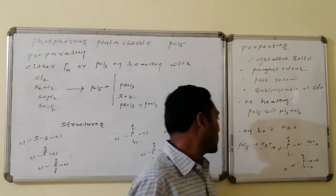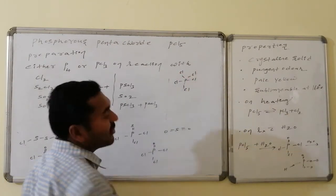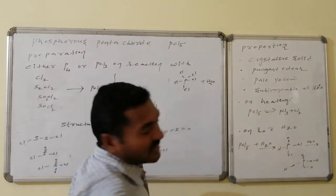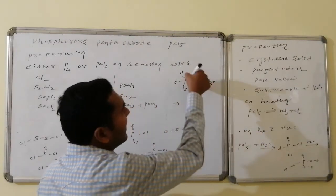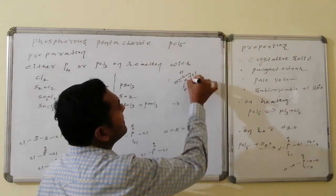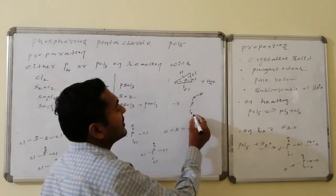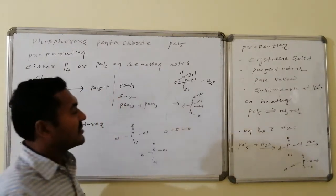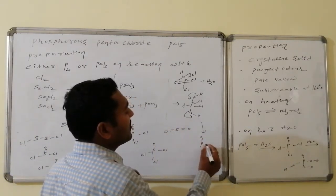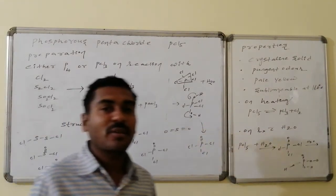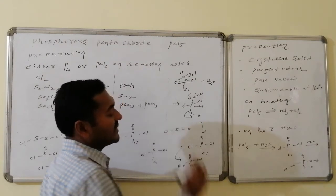Mechanism of PCl5 hydrolysis: in the trigonal bipyramidal structure of PCl5, the axial Cl atoms are replaced by OH⁻ (nucleophile from water). In the first step with limited water, the two axial positions are replaced by OH, but this intermediate is unstable and eliminates water to form phosphorus oxytrichloride POCl3 (P=O with three equatorial chlorines). Further hydrolysis with excess water replaces all remaining chlorines with OH groups to give H3PO4 — phosphoric acid.